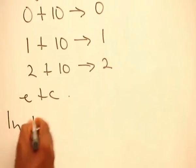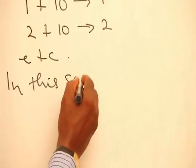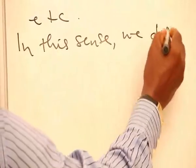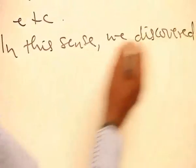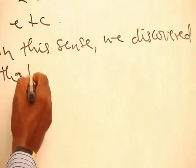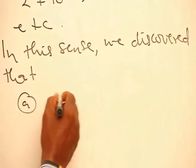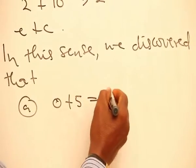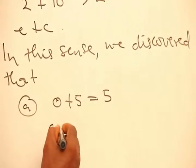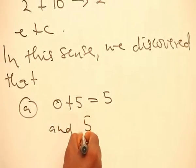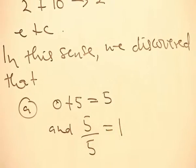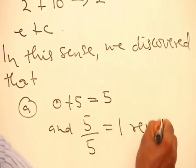In this sense, we discover that 0 plus 5 is equal to 5. And the 5 divided by 5 is equal to 1, meaning a remainder 0.